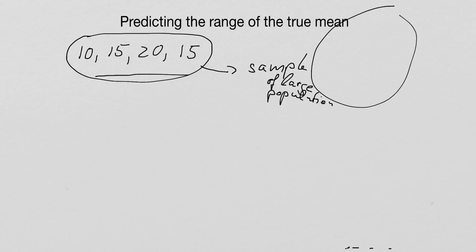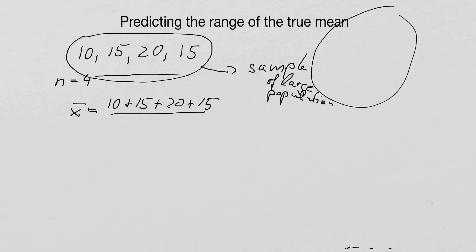The sample mean is very easily calculated. We call this x-bar because we are dealing with a sample. All we need to do is add up our observations: 10 plus 15 plus 20 plus 15, and divide by the number of observations n, which is 4. That gives us 60 divided by 4, which is 15. So our sample mean is 15.